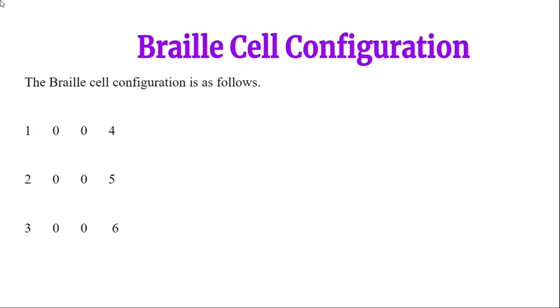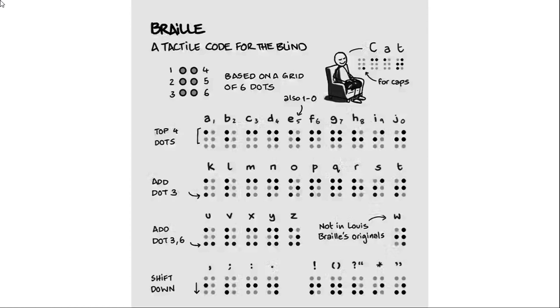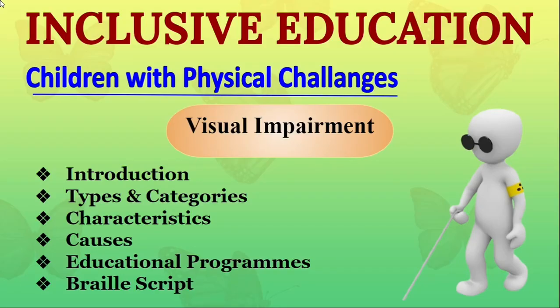The Braille cell configuration is arranged with positions 1, 4 in the first column; 2, 5 in the second; and 3, 6 in the third. A chart of Braille English alphabets is provided along with Braille cell configuration codes for tactile reading, used by those who work with and support blind individuals.